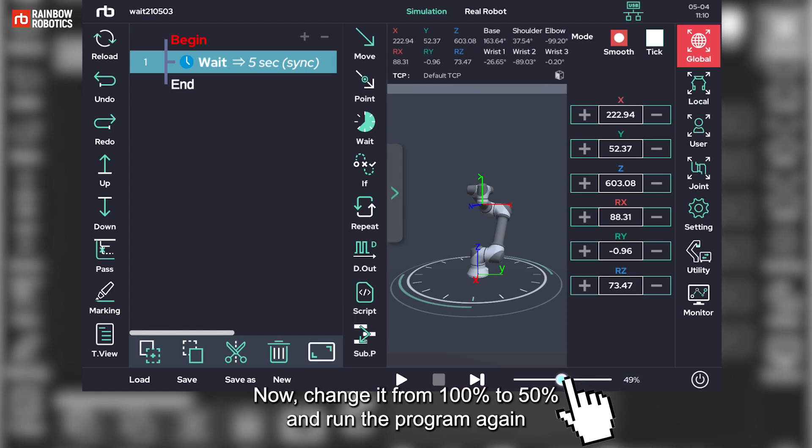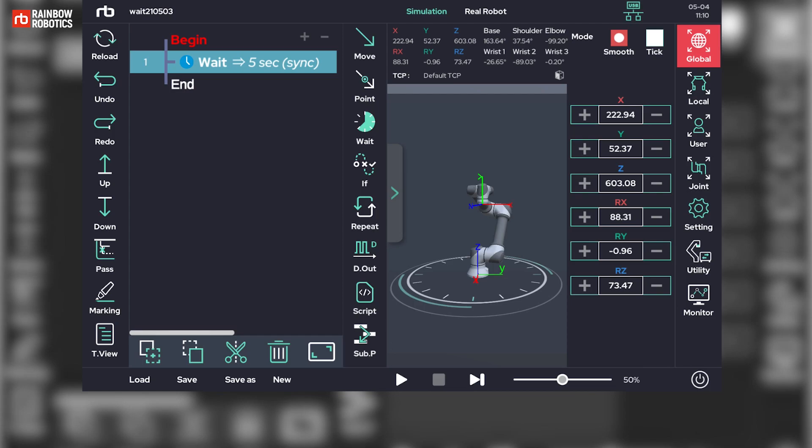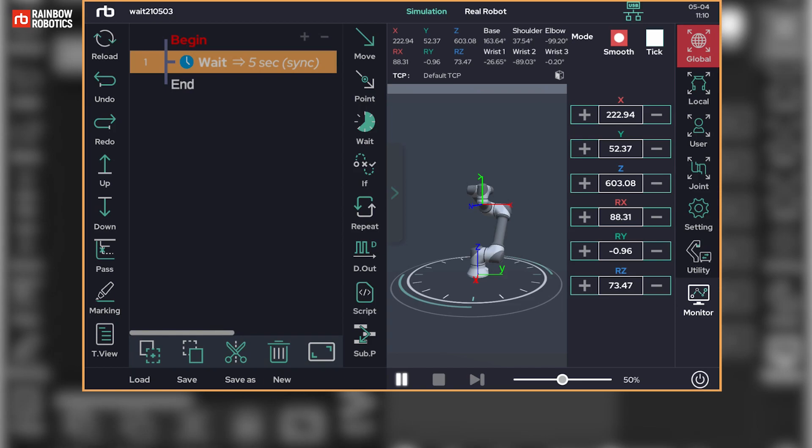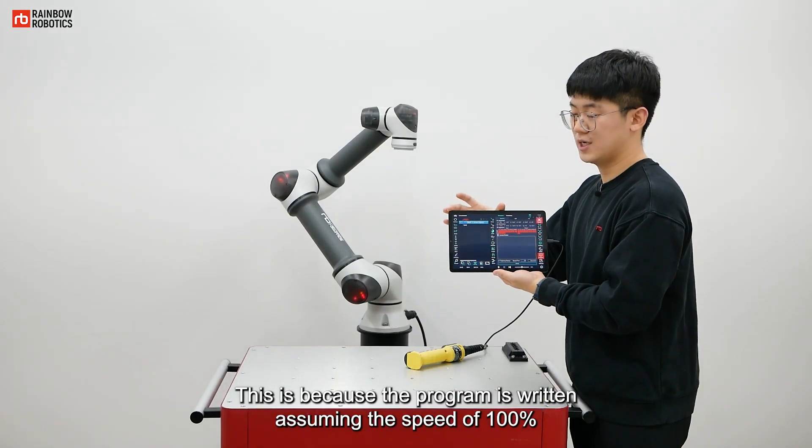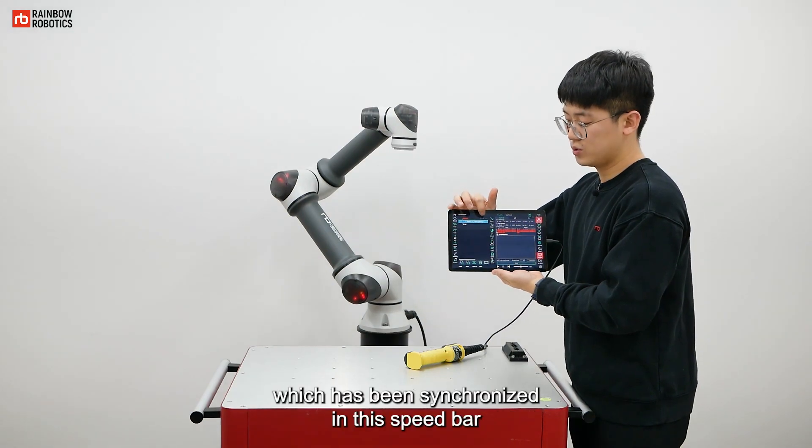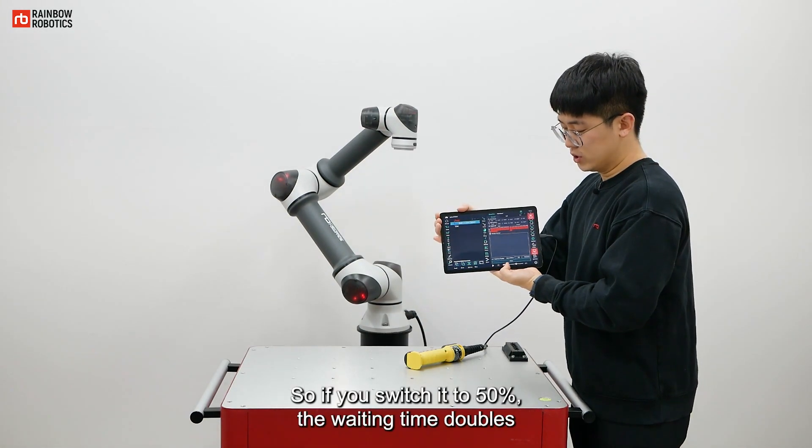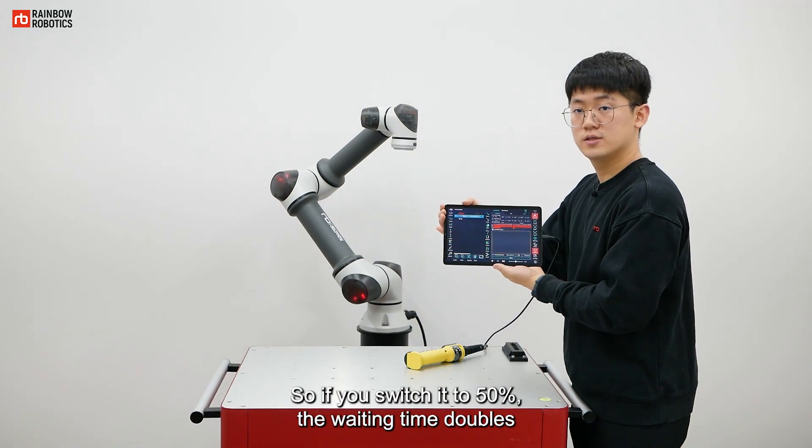If the speed bar is set to 100%, we can see that it waits for 5 seconds. Now, change it from 100% to 50% and run the program again. Compared to previous 100%, the waiting time has increased by approximately 2 times. This is because the program is written assuming the speed of 100% which has been synchronized in this speed bar. So if you switch it to 50%, the waiting time doubles.